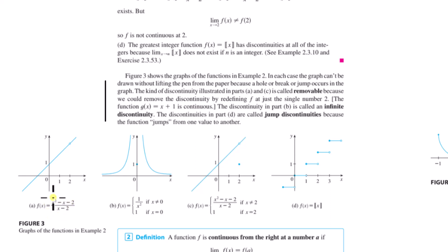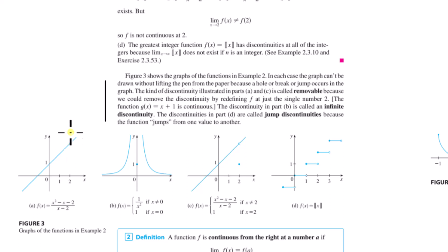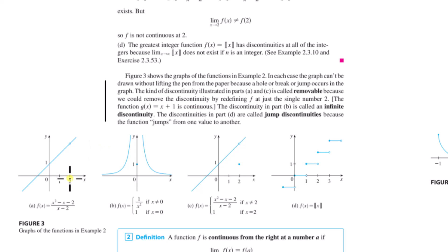If you put this function into Excel and input any value, that's your output — but if you put in 2, it gives you an error. This is called a removable discontinuity because we can remove the discontinuity by redefining f at just the single number 2. We just say we're going to define f(2) to be 3, and we've removed the discontinuity.